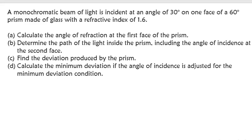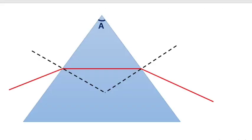Here's an example of our prism. When we're talking about the first face, we're talking about where the light is incident. Between the normal — this is normal 1, and this one here is normal 2 — between the normal and the incident ray, we find our angle of incidence I.